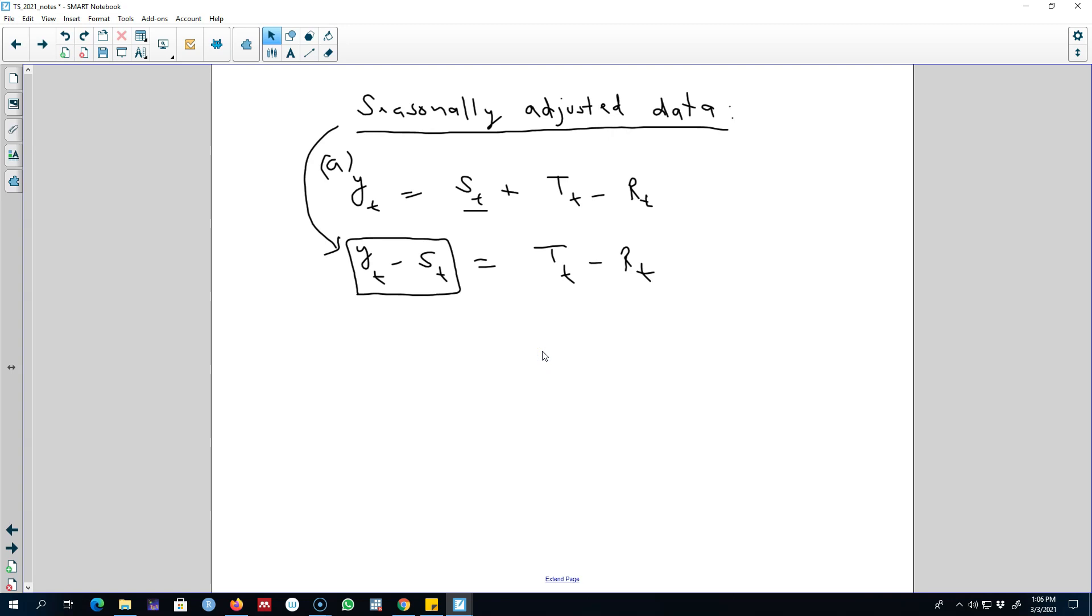Remember, we can either use the additive model or the multiplicative model. If we are using an additive model, then we can simply subtract the seasonal component from our series, and now our adjusted data will contain only the trend cycle component and...